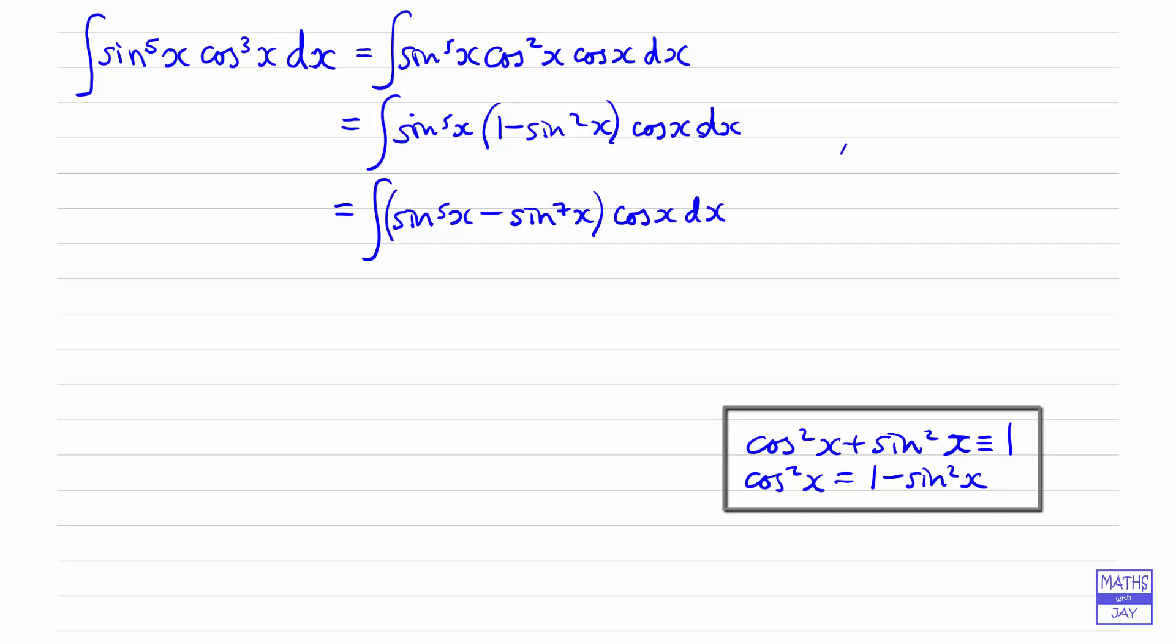Right, so now we're ready to write down our substitution for u. We can do this. So u is going to be sine x. We can do this because when we differentiate sine we get cos. So it's all going to be nice and easy to work out. So differentiating u, we get cos x. So that means we can replace cos x dx by du. So this becomes incredibly simple to integrate.